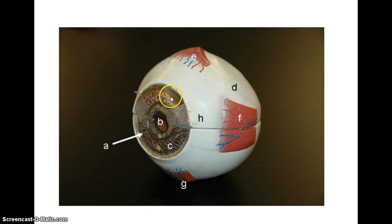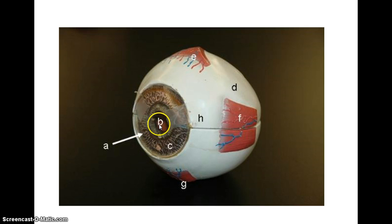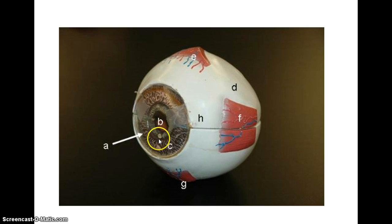What you can see here is the cornea — this clear covering of the eye, which in this case is being held on by tape. Underneath, what you think of as the colored part of the eye is the iris. And then this hole right here is the pupil, where light will travel into the eye. The iris actually functions to control the size of the pupil, which is where the light travels through.